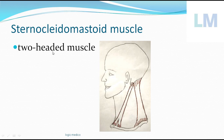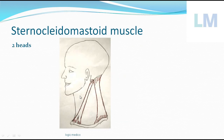The sternocleidomastoid is a two-headed muscle. A well-known example of a two-headed muscle is the biceps brachii at the front of the arm, with its long head and short head. Similarly, the sternocleidomastoid has one head beginning from the sternum — the sternal head — and another head beginning from the clavicle — the clavicular head.